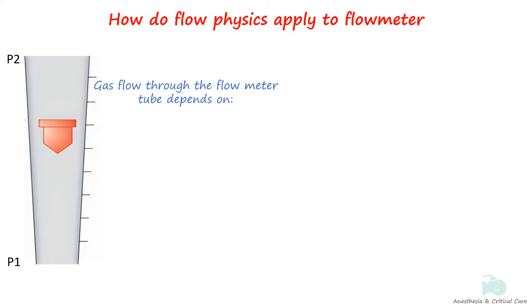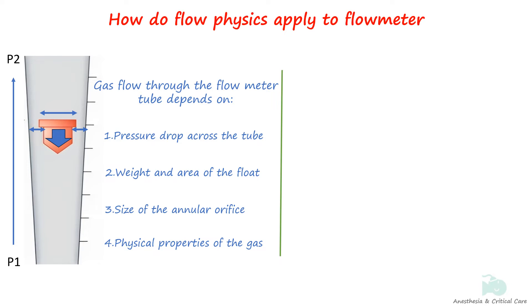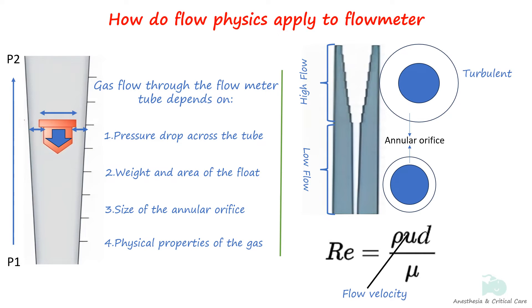The rate of flow through the flow meter tube depends on the pressure drop across the tube, weight of the float or cross-sectional area, size of the annular orifice, and the physical properties of the gas. As the bobbin rises, there is an increase in the area of the annular orifice, reducing resistance and resulting in increased flow. Applying Reynolds' formula, increased flow leads to increased turbulence. At higher flow rates, since the flows are turbulent, density of the gas is important. At lower flow rates, the Reynolds number is low, flow is laminar, and viscosity plays an important role.